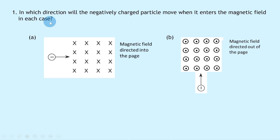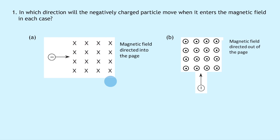In part a we've got an electron moving to the right, with a magnetic field directed into the page, shown by the crosses. Using the right hand rule, our index finger represents the magnetic field direction and should be pointing into the page or screen, and then your middle finger should be pointing to the right.